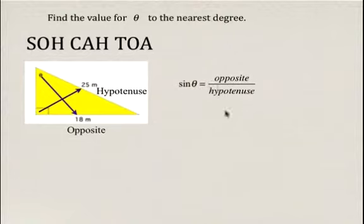So sine theta equals opposite over hypotenuse. That means sine theta, if we substitute in the values for opposite and hypotenuse, is 18 over 25.